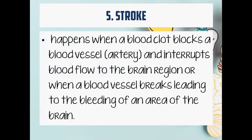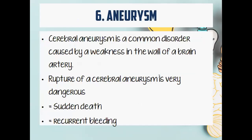Next is stroke, which happens when a blood clot blocks a blood vessel or an artery and interrupts the blood flow. We also have aneurysm, a common disorder caused by a weakness in the wall of the brain artery. A rupture of a cerebral aneurysm is very dangerous — it could cause sudden death, recurrent bleeding, and can also cause death.